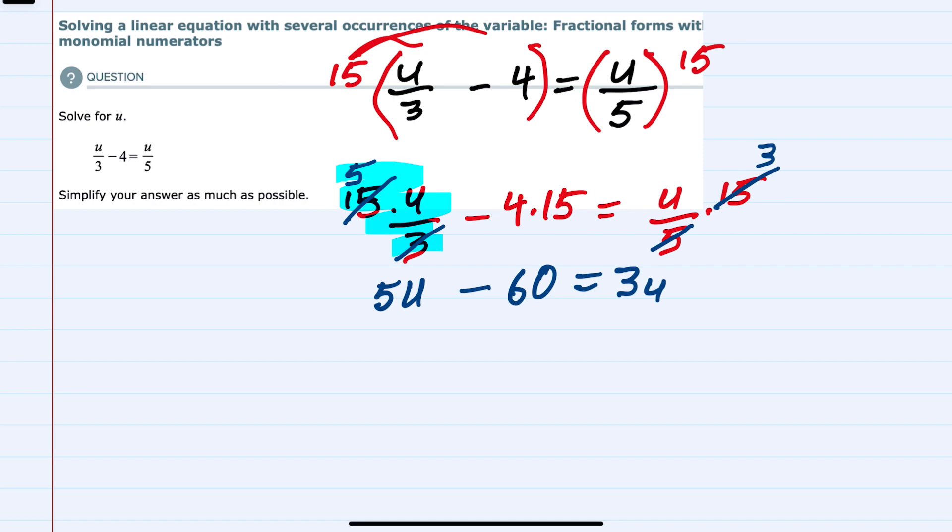I can continue to solve this equation. I have u's on both sides, I want to get them on one side. I can move them either direction, and here I'll just move this 5u over to the other side by subtracting 5u from both sides of the equation.